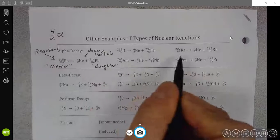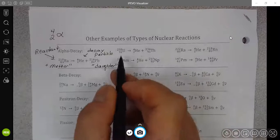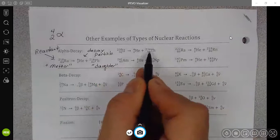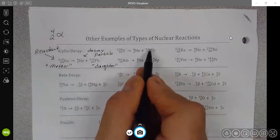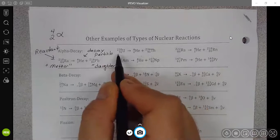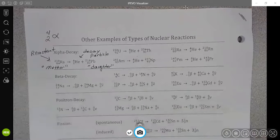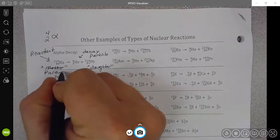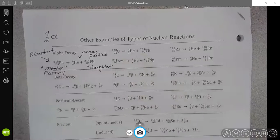Notice that in all of these reactions, whenever you have alpha decay, your mass number goes down by four between mother and daughter. And your atomic number goes down by two between mother and daughter or parent. Sometimes it's parent and not just mother, so the parent and the daughter.